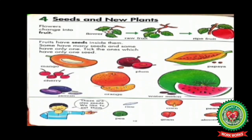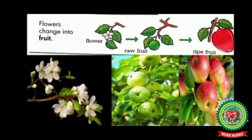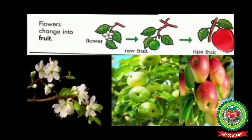Now children, open your Enjoying Science book, page number 10. Let's read: flowers change into fruit. Some flowers do not change into fruit, like rose and lily. But many flowers are changing into fruit — here we can see raw apples and ripe apples as examples.